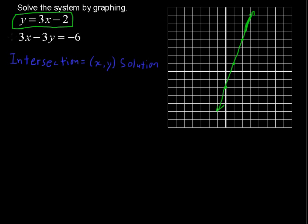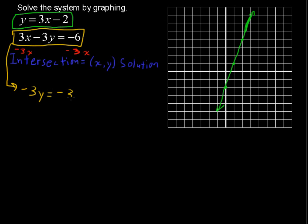Now I'm going to graph the other equation: 3x minus 3y equals negative 6. The easiest way to graph something is to put it into y-intercept form — that is, we'll solve for y. So let's first subtract 3x from each side. Then we get negative 3y equals negative 3x minus 6. Now we want y by itself, so we're going to divide everything by negative 3.